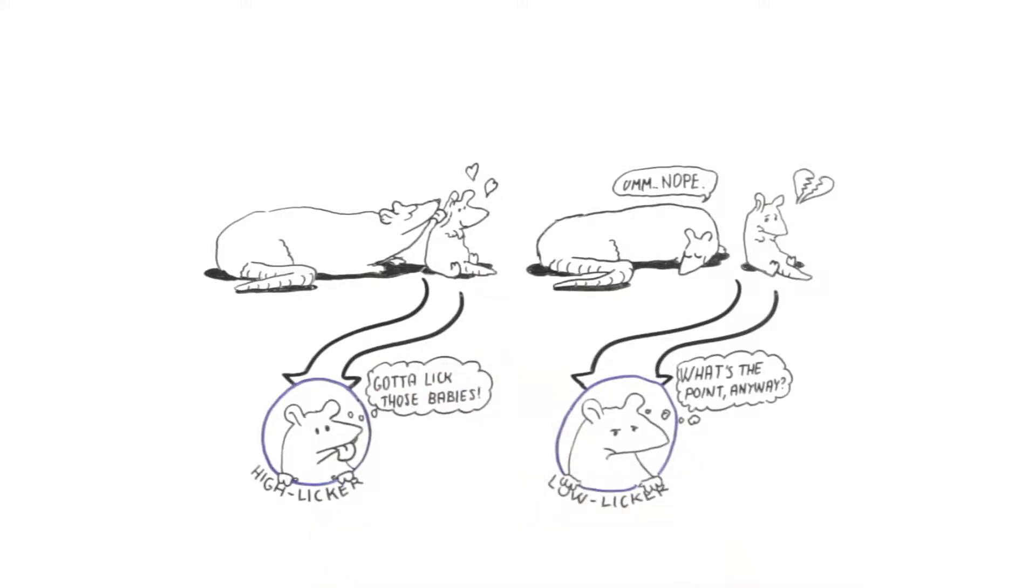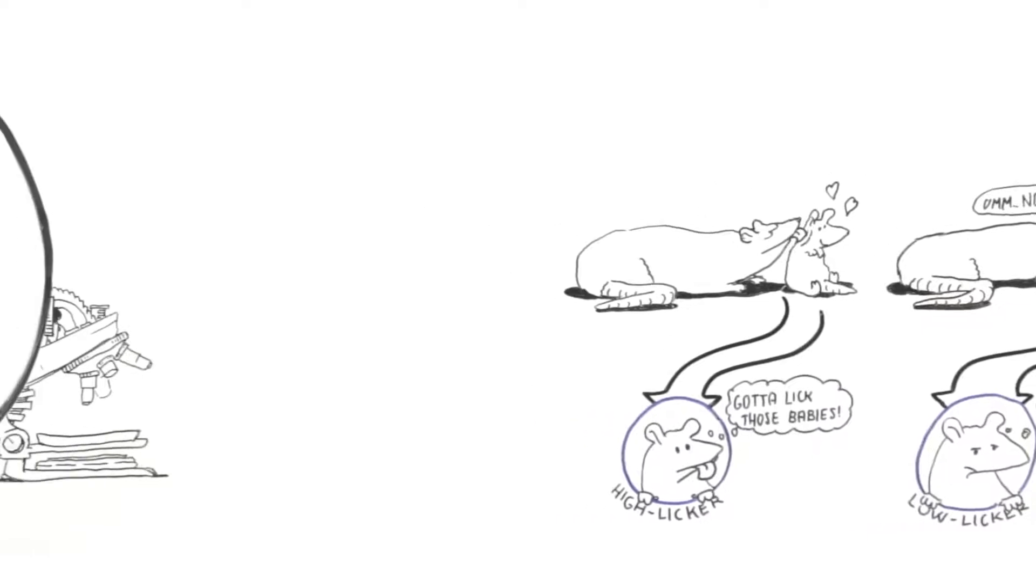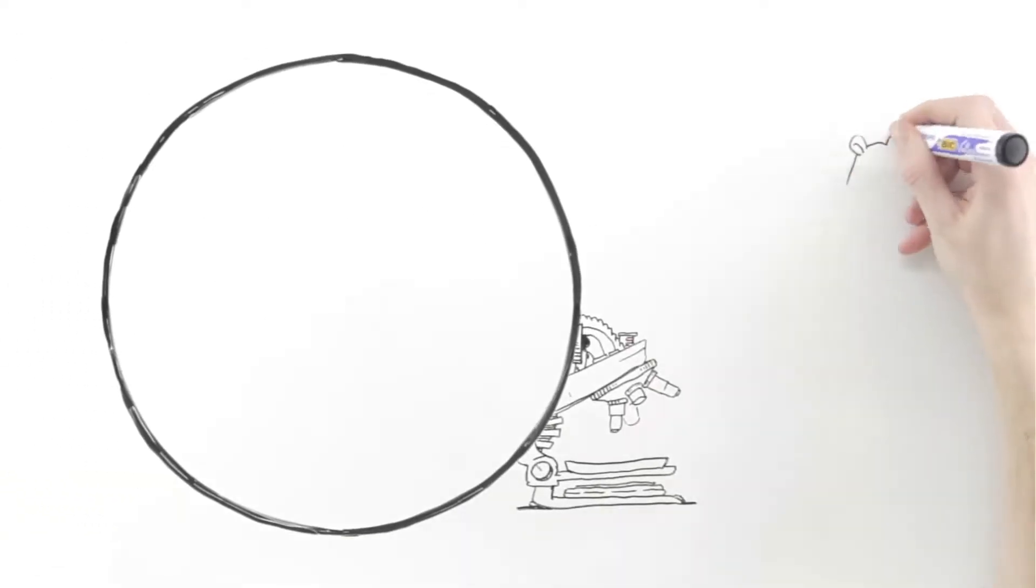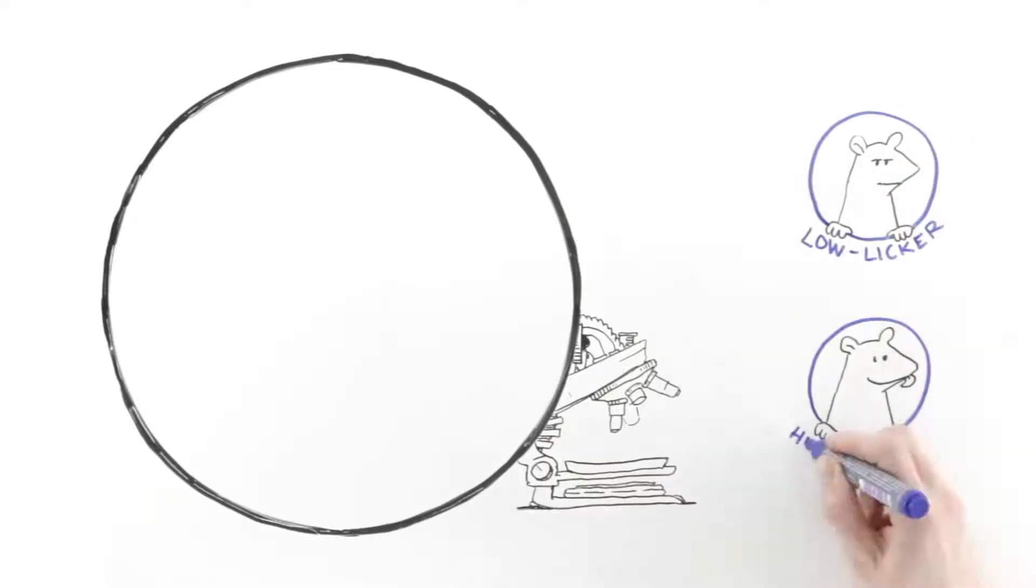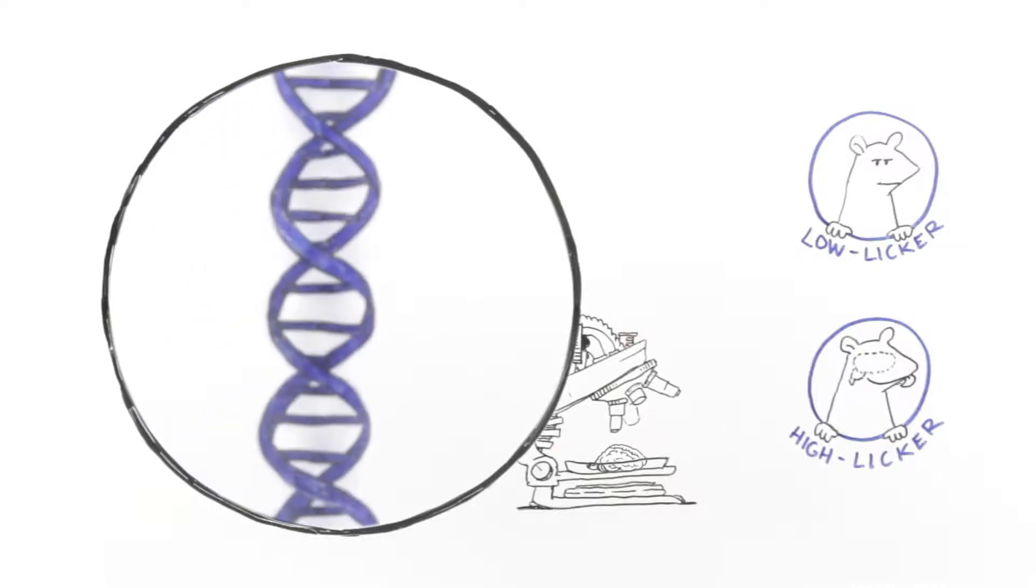So genes really don't have anything to do with it then? In true scientific fashion, the researchers dove right into the brains of these rats to see what, if anything, was different in the brains of the babies of high-licking versus low-licking mothers. When they looked at genes that possibly play a role in motherly care, they found crucial differences.